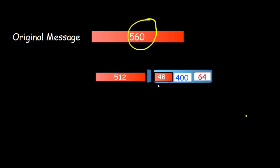If the message is so large that it goes into three blocks, the same rule applies: in the last block the final 64 bits are reserved for carrying the length of the original message, and the remaining space is filled with padding. This is how the block structure works. Now let us see how we write the Python code for the MD5 algorithm.